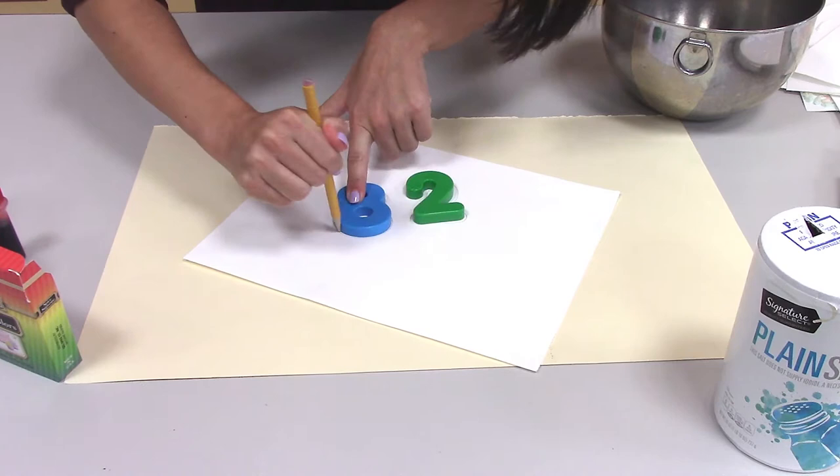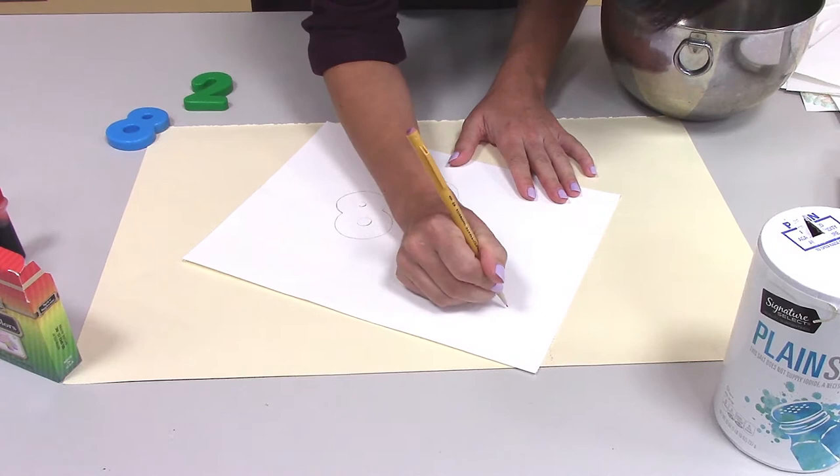Now you don't have to trace either. You could also draw some pretty pictures. Maybe I want to draw a pretty heart right here. Maybe I want to do a flower.